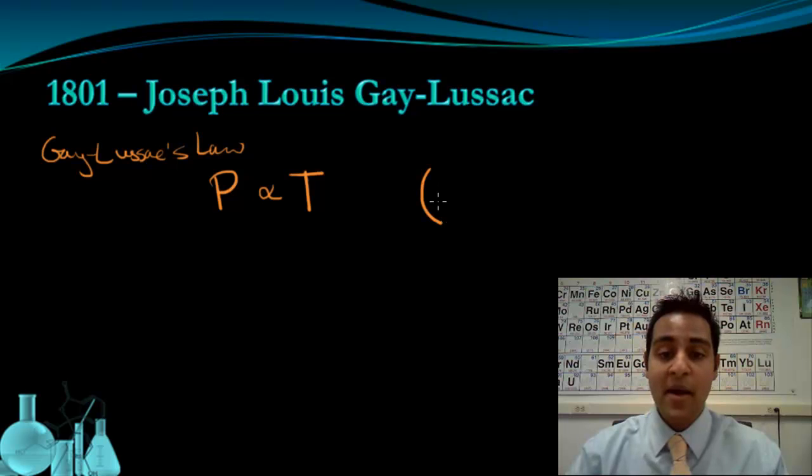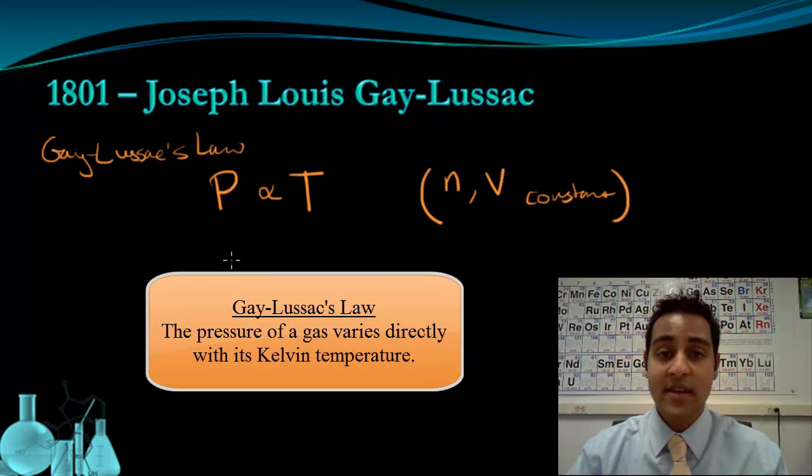This law assumes that the amount of gas, the n, the moles of gas, and the volume are kept constant. Gay-Lussac's Law says that the pressure of a fixed volume of gas varies directly with the kelvin temperature.